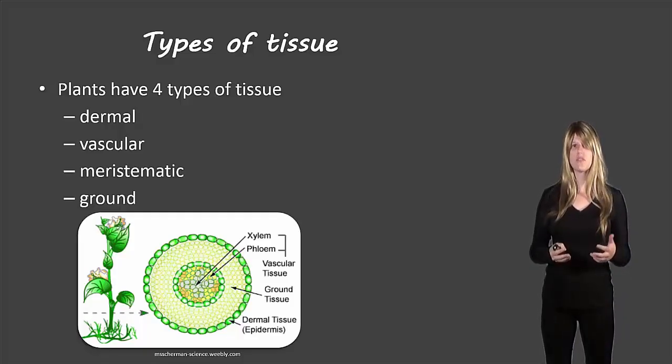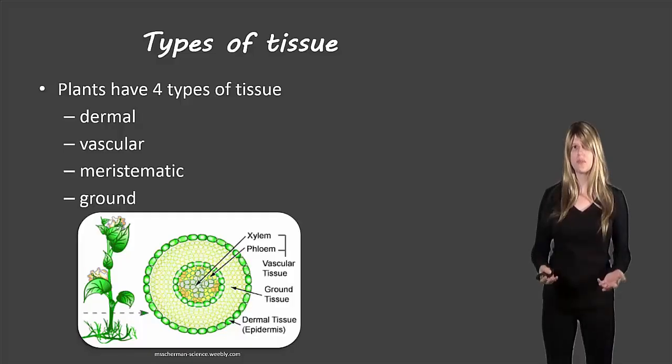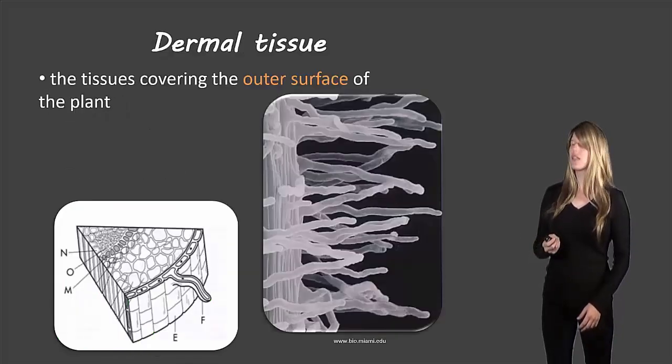Meristematic tissue sometimes isn't included in the four types of tissue. Sometimes it's just considered a type of cell. That's why many of these pictures don't include it, but it is a type of tissue that we'll be talking about in our class.